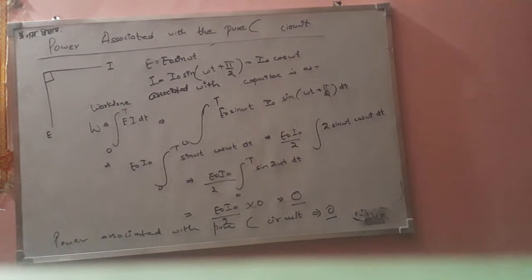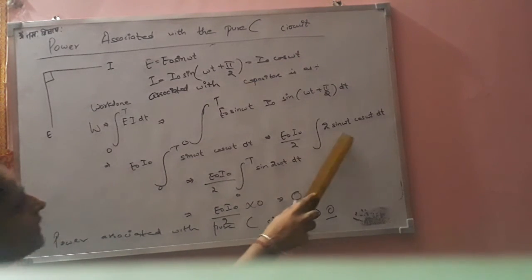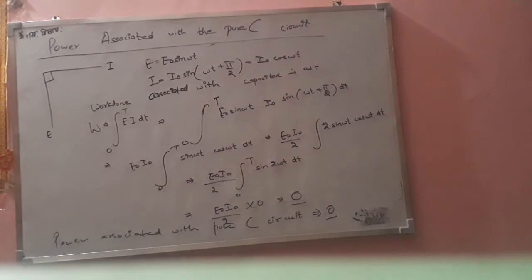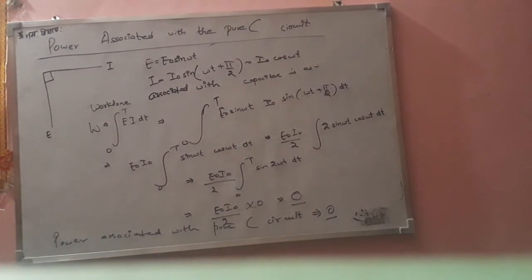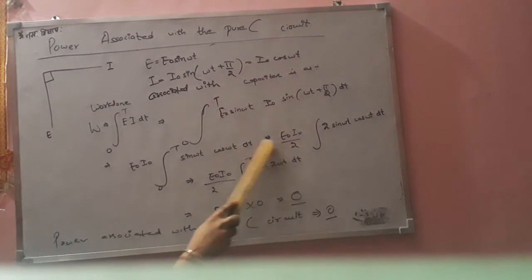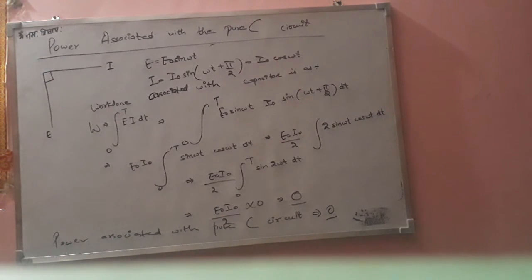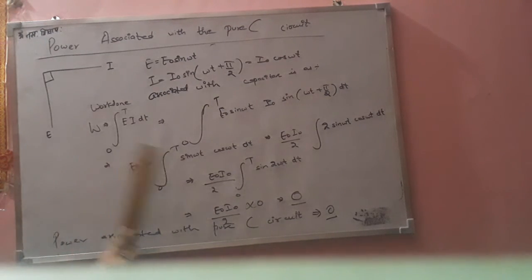This gives E-naught·I-naught by 2, times the integral of 2·sin(omega-t)·cos(omega-t)·dt. Just as we did in the pure L circuit derivation, this integral evaluates to zero. Therefore, the work done associated with the capacitor is zero.